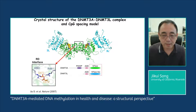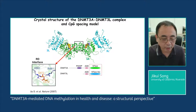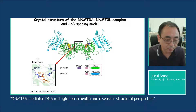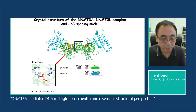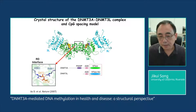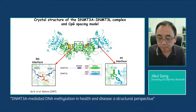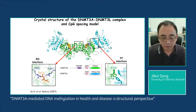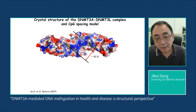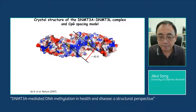This gives rise to two distinct dimeric interfaces. The first interface is called the RD interface, mediated by a salt bridge between arginine residues from one DNMT3L monomer and an aspartate residue from another DNMT3L monomer. The second interface is called the FF interface, mediated by aromatic packing of phenylalanine residues between DNMT3A and DNMT3L. This structure contains two active sites separated by a distance of about 40 Ångströms, equivalent to one helical turn of B-form DNA.